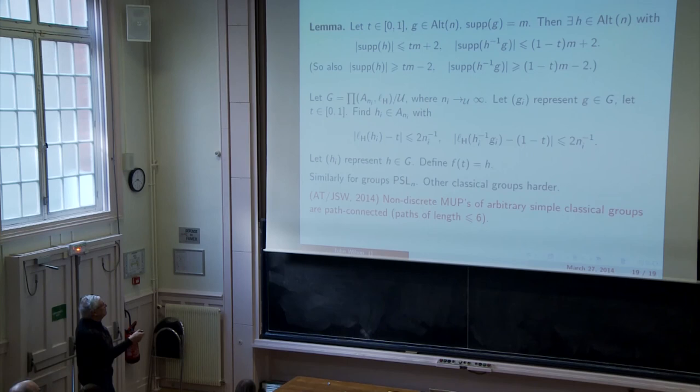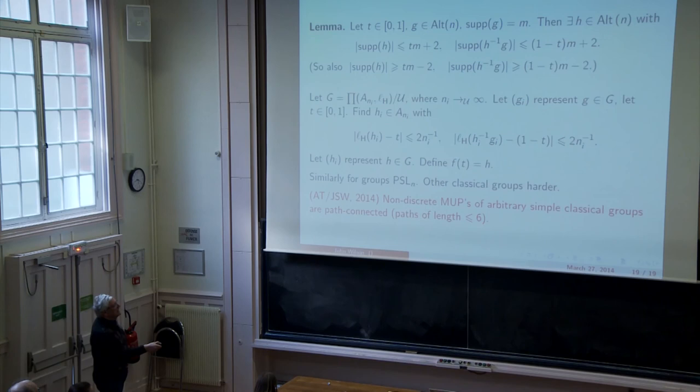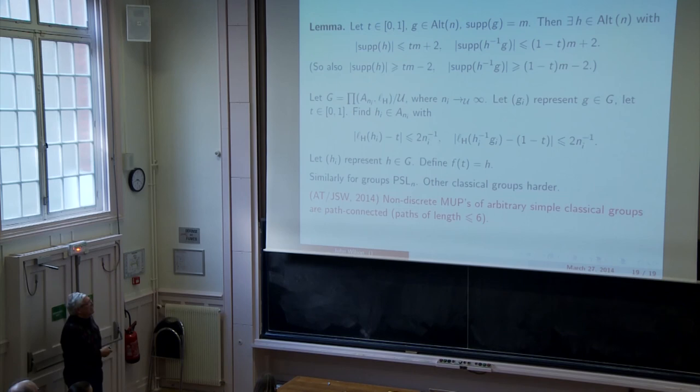So, what can we do? Non-discrete metric ultraproducts of arbitrary simple classical groups. So, this includes symplectic, unitary, alternating. They are at least path connected. And there are paths of length at most six. Of course, we'd like the length to be equal to the length of the element, but not yet. So, instead we have to put together six pieces. In the case of finite groups, I know how to reduce this six to three, but that uses really deep finite representation theory of finite groups.